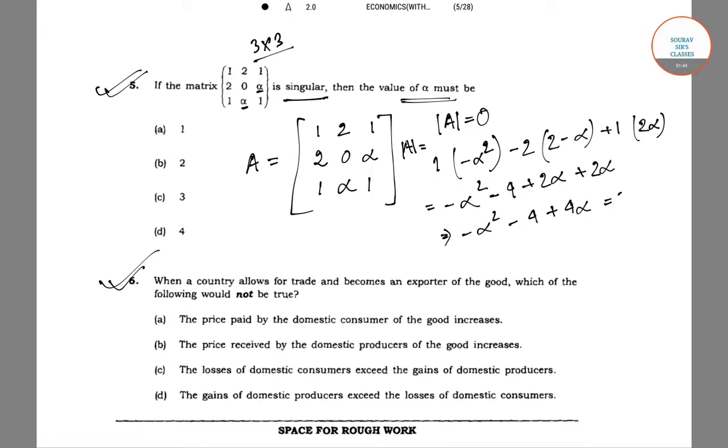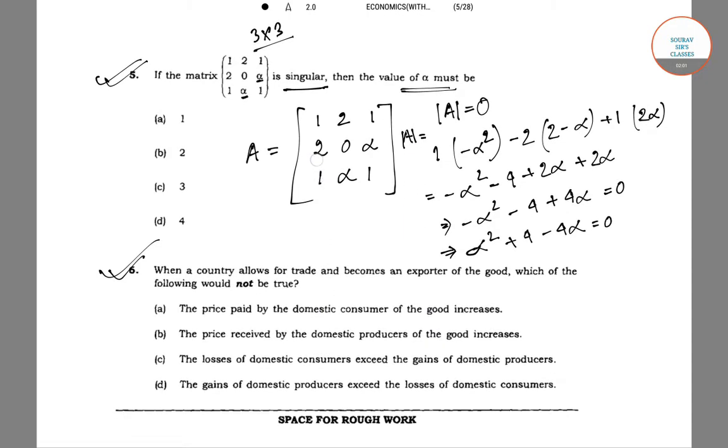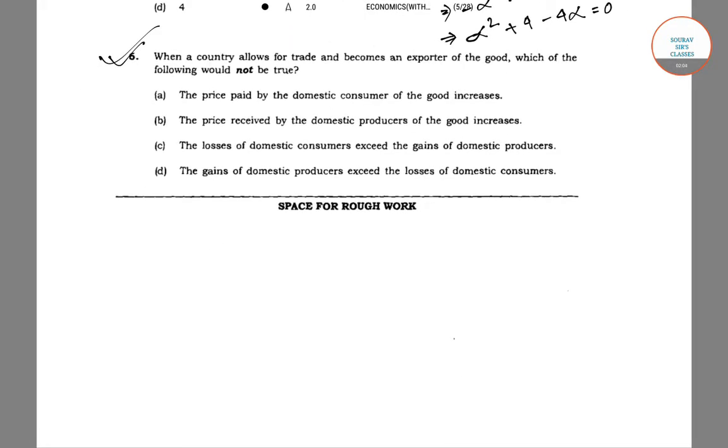That equals zero. Or we can write minus alpha squared plus four minus four alpha equals zero. Now we'll have to solve this quadratic equation: alpha squared minus four alpha plus four equals zero.